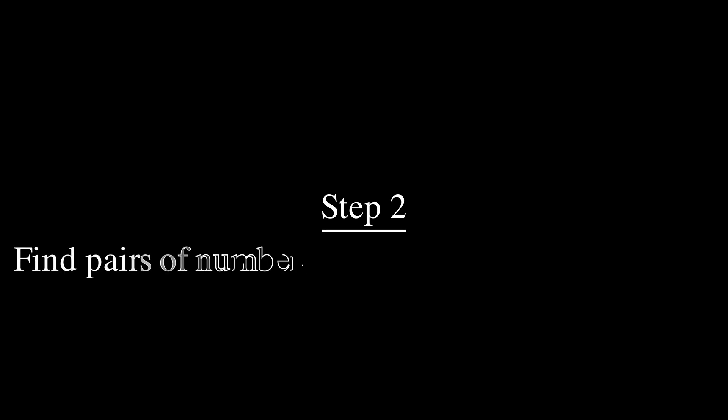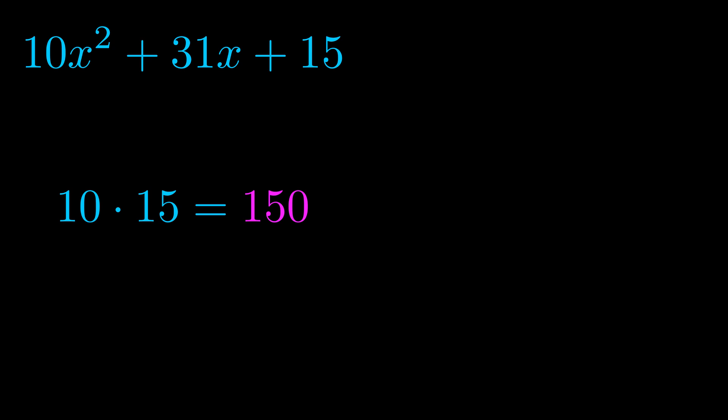Step two is to try to find all of the pairs which multiply to this number. Now it turns out you don't really need to find all of them, but go ahead and write down as many numbers as you can that multiply to the magenta value for now. Pause the video and resume when you're ready to continue. Okay, here's what I came up with.